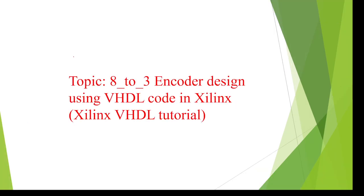I am going to explain about an 8-to-3 encoder design using VHDL code in Xilinx. If you want to get my future videos, please subscribe to my channel. An encoder converts 2^n input lines to n output lines. For example, if n equals 3, there are 3 output lines and 2^3 equals 8 input lines. If n is 4, there are 16 inputs to 4 outputs — that is how an encoder works.